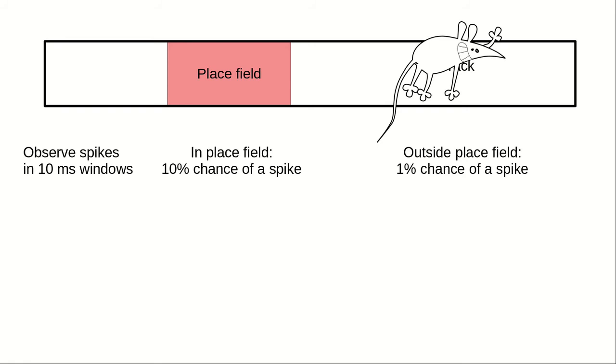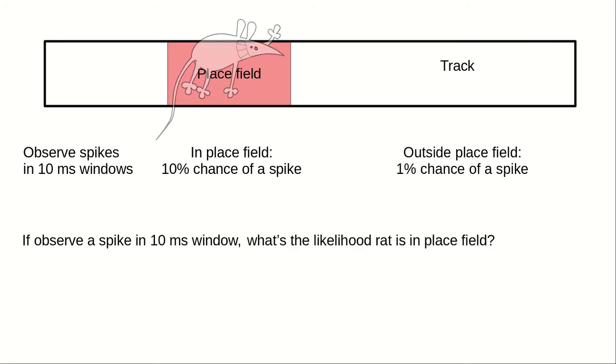After these preliminary experiments, you run the real experiment. Now you can observe only the spikes of the neuron, but you cannot see the rat. To keep the math simple, we're going to analyze the data from each 10 millisecond window in isolation. If in one of these windows you observe that the neuron spiked, what can you conclude about the likelihood of the rat being in the neuron's place field during that time window? Is the likelihood that the rat is in the place field A, 10%, B, 1%, C, 90% of the time, or D, do you not have enough information?